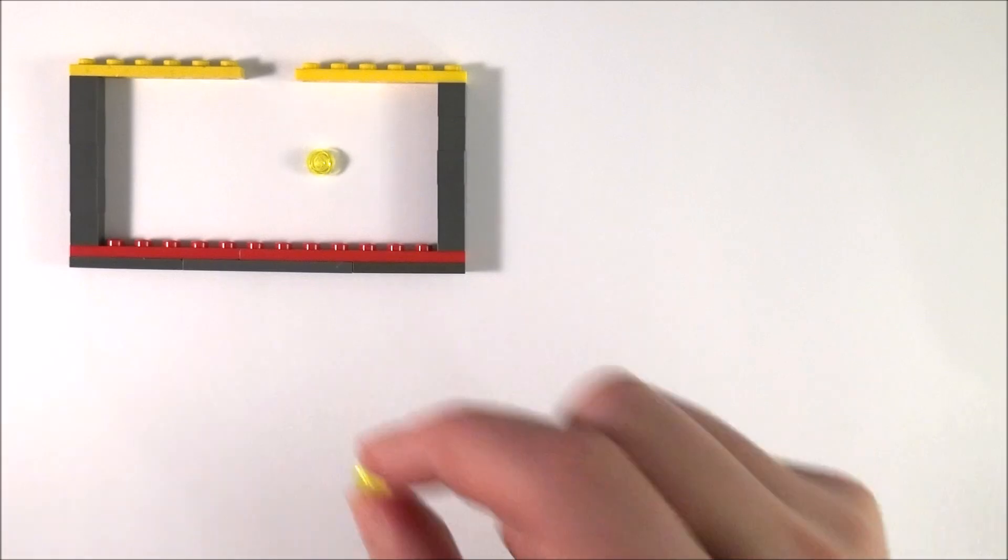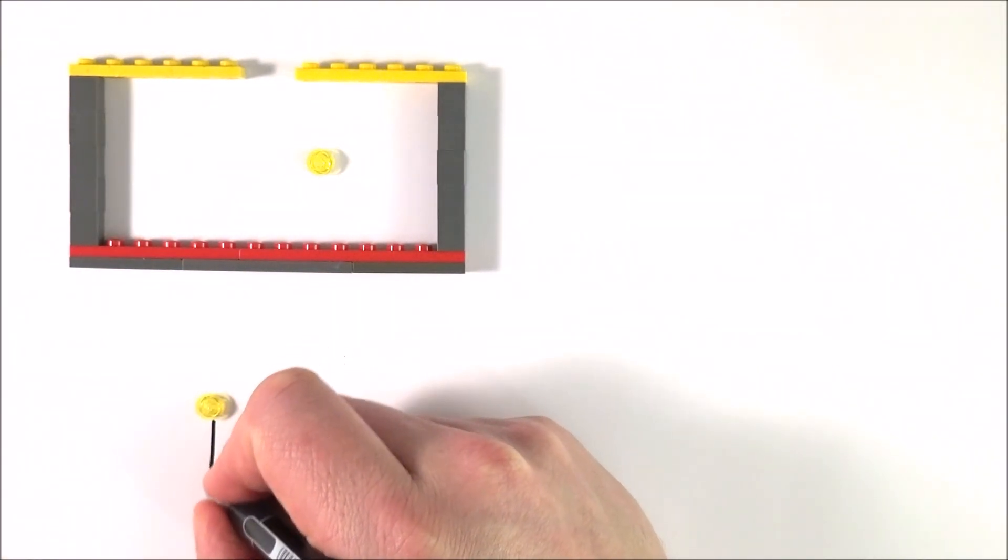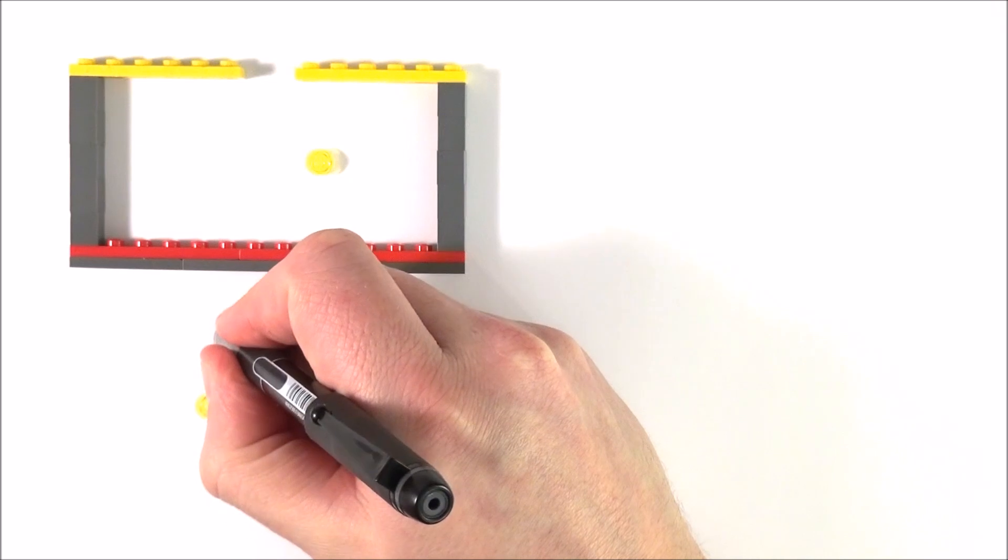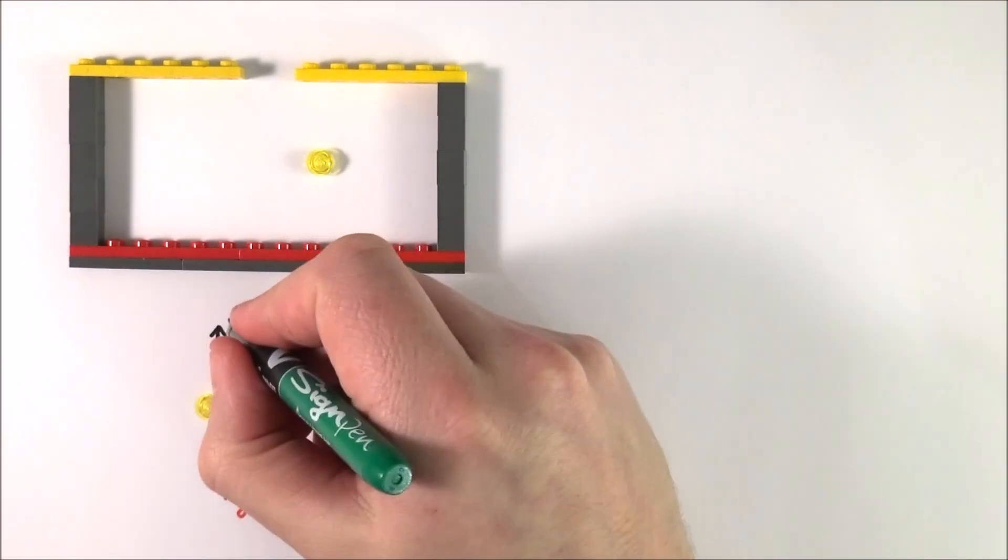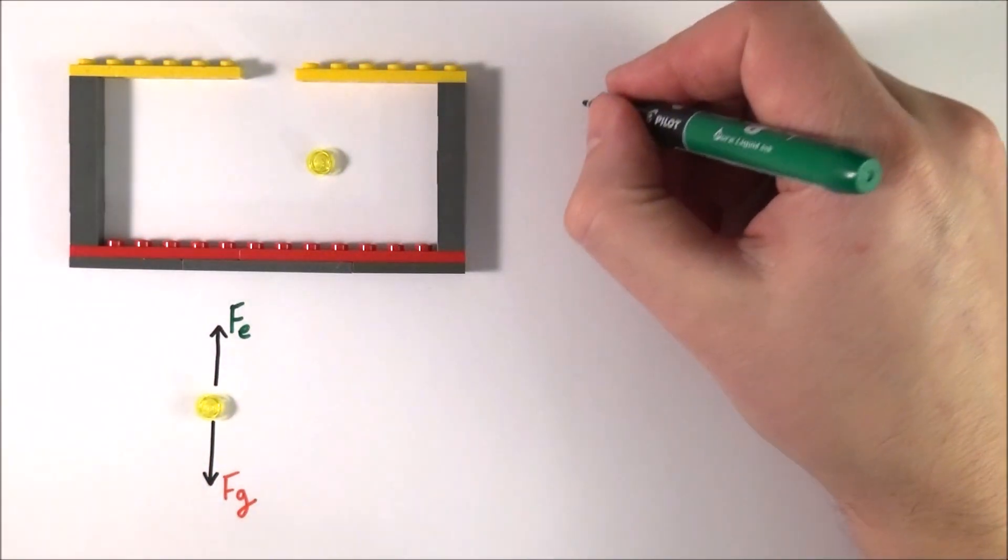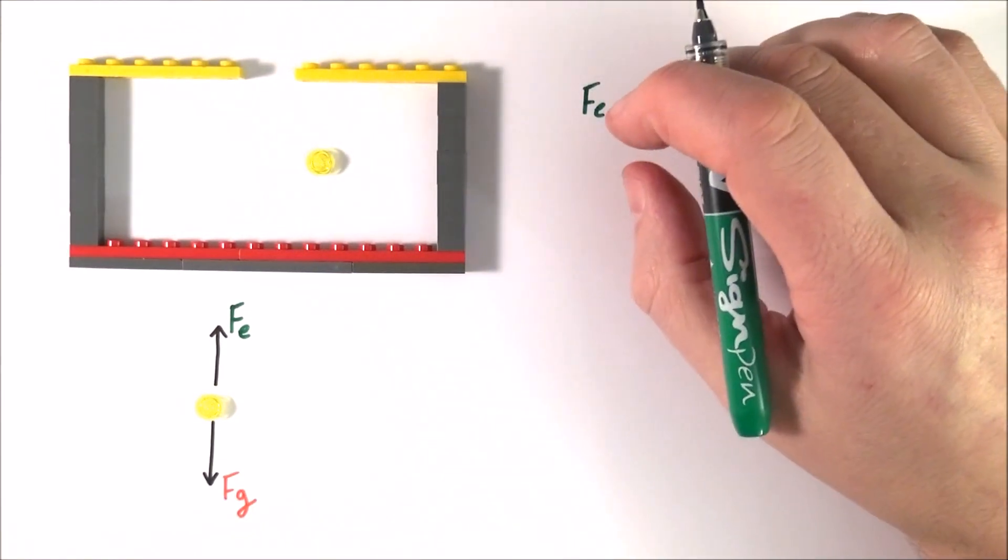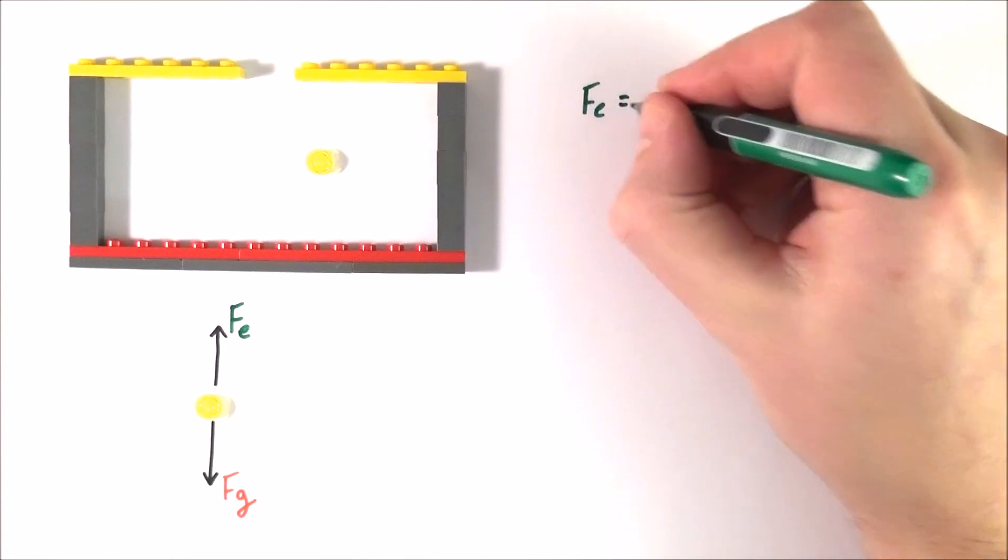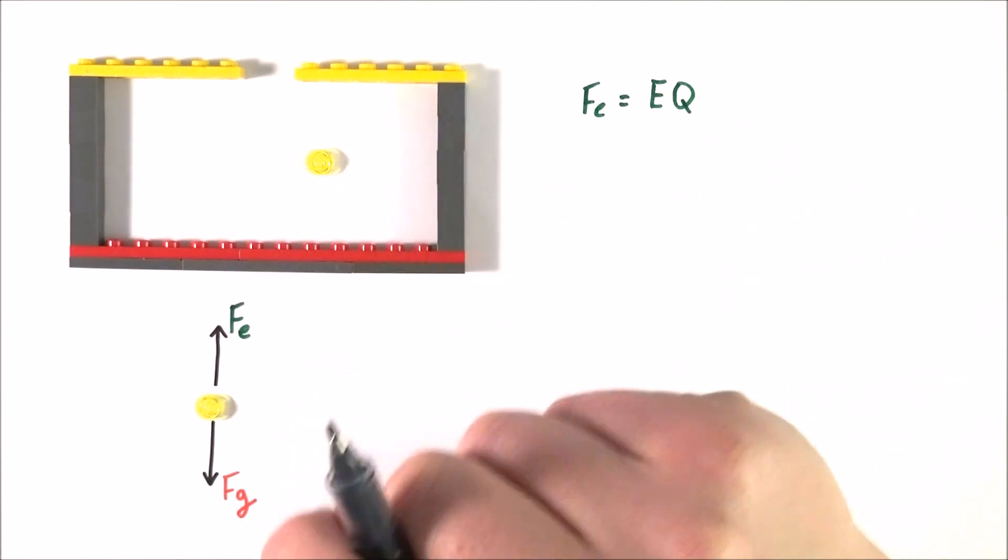Now if we think about the forces that might be on one of these drops, well there's going to be two forces that we can consider when it's not moving. First of all there's going to be a downwards force and there's also going to be a force upwards. I'm going to label the downwards force Fg to represent the force due to gravity and the force upwards is due to the electric field so I'm going to call that Fe. Now this force upwards Fe is due to the fact that we have an electric field and this is acting on a charged particle. The force is equal to the strength of the electric field E multiplied by the charge on the oil drop that we have here.